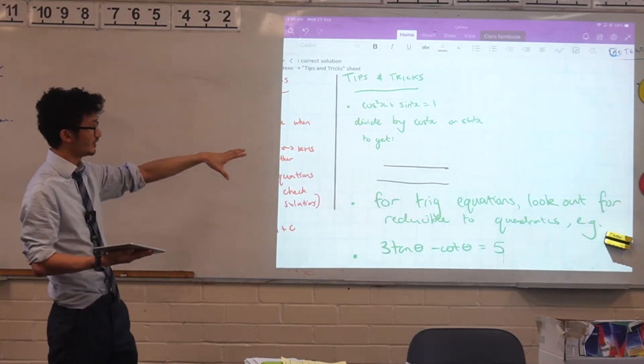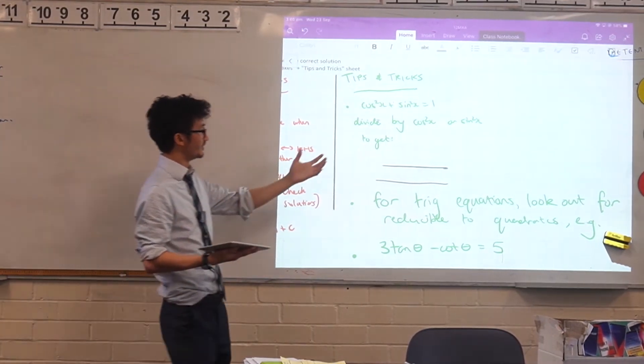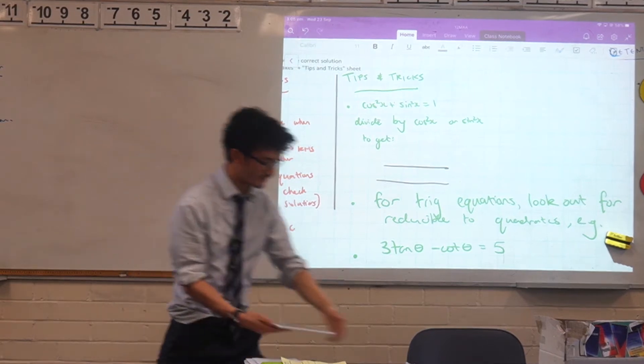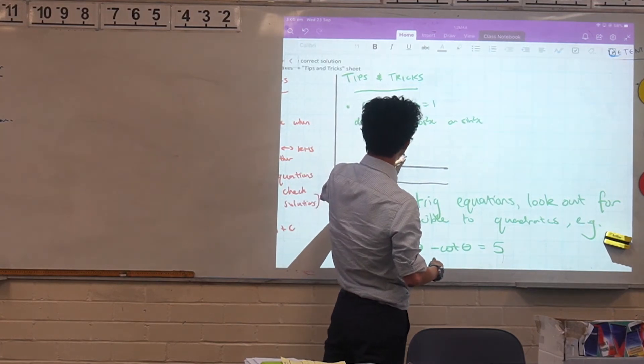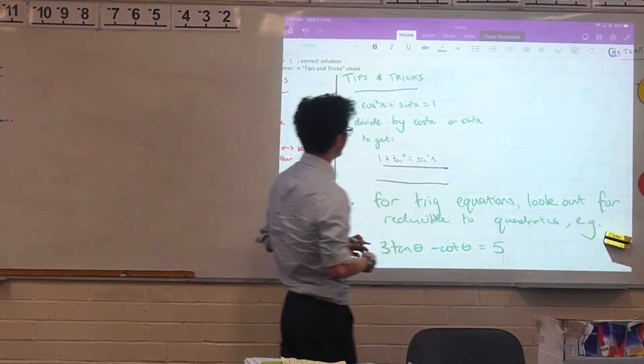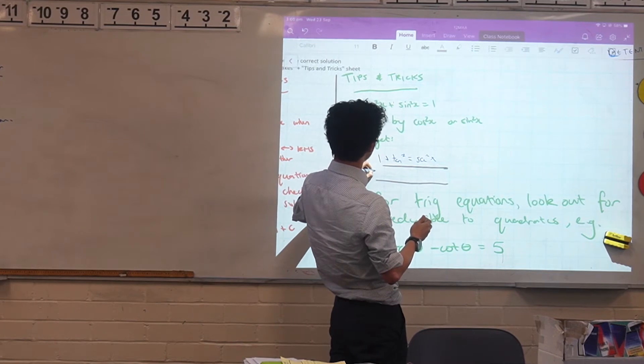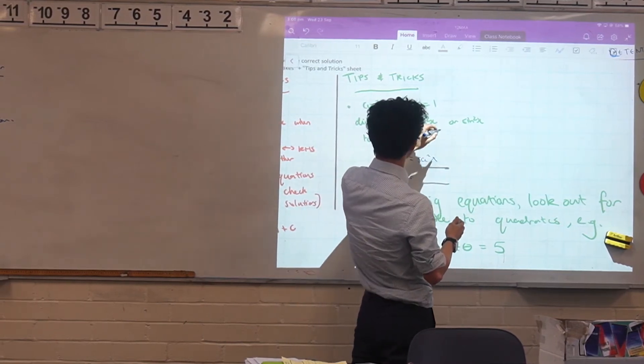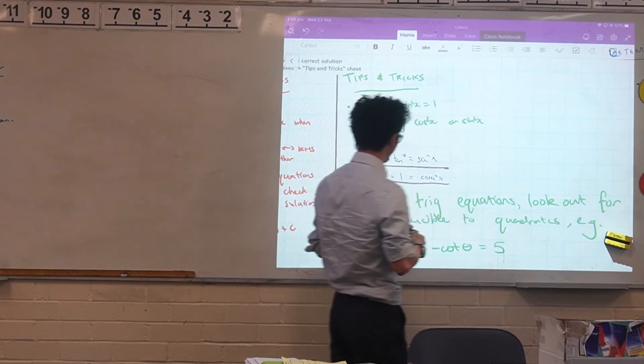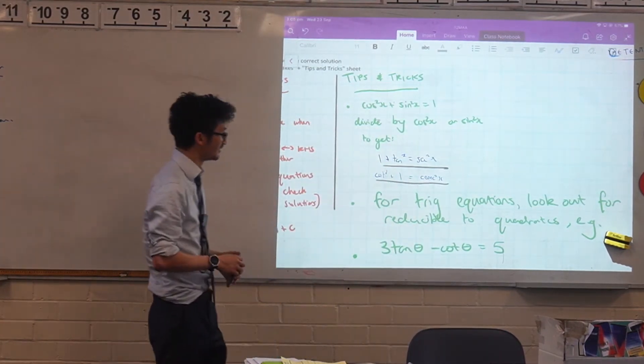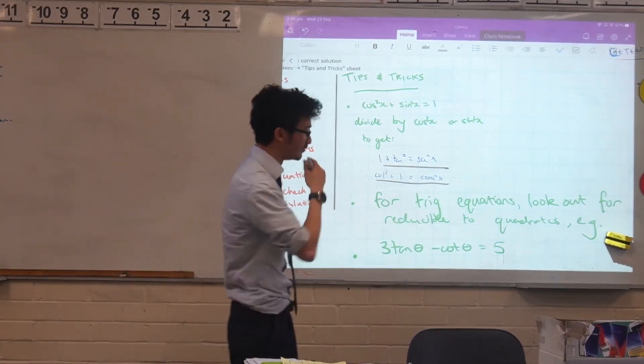But if you need to access the other ones, you actually need to use other methods. So one of them is that you can divide by cos squared or sine squared. If you divide both sides, you'll get one plus tan squared is equal to sec squared. And then if you divide by sine squared, you'll get cot squared plus one is equal to cosec squared. There's other ways to remember that, like mnemonics. Like one in cot is cosy, one in tan is a secret. So those are the different ways that you can remember them as well, whichever way makes more sense to you.